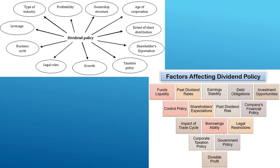The directors of a company have sole right to declare dividend and determine its amount from the company's earnings. But in addition to legal restrictions, they have to consider many factors while deciding the dividend policy. From this slide, we can see that there are lots of factors which affect dividend policies, like types of industries, profitability of a company, ownership structure, shareholders' expectations, growth, business cycle, legal rules, past dividend, risk, earning stability, divisible profits, corporate taxation policies, and government policies.